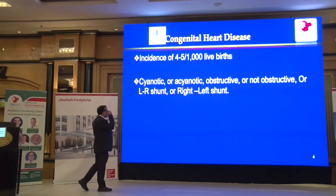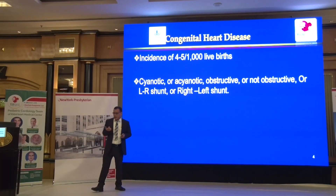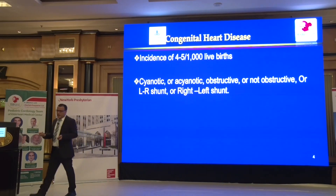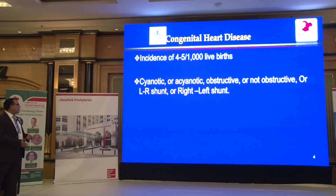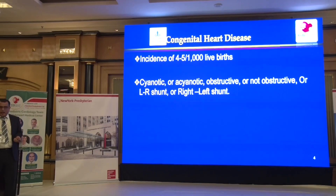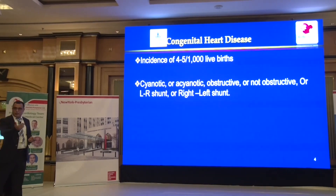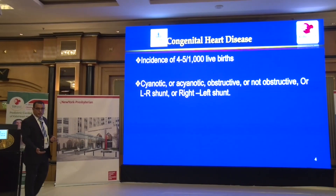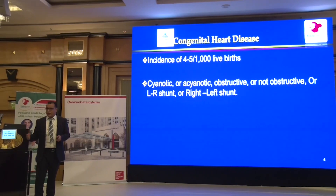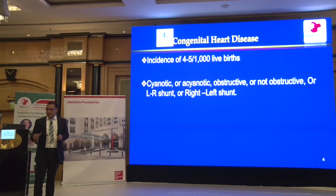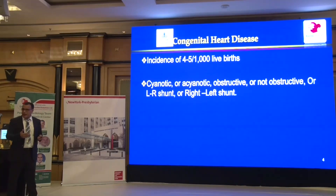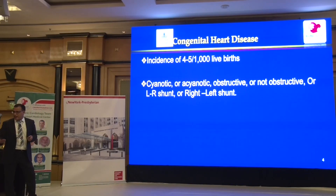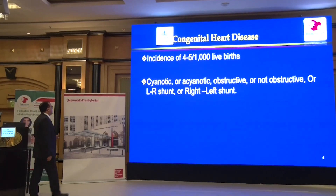Why congenital heart disease? We care about it because it accounts for the most congenital anomalies — 50% of children with congenital anomalies will have a congenital heart disease. It's the most common cause of death from congenital anomalies, especially in the first year of life. Every single child you might lose, you can also save and give a reasonably good life.